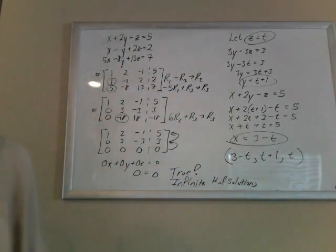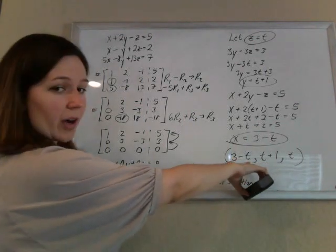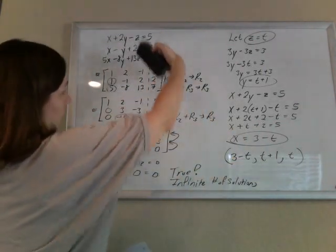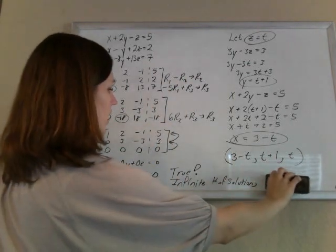Now to make it less abstract, what this means is I can choose any number I want for t. Absolutely anything. And it'll make a solution to this. So to give you a couple examples.